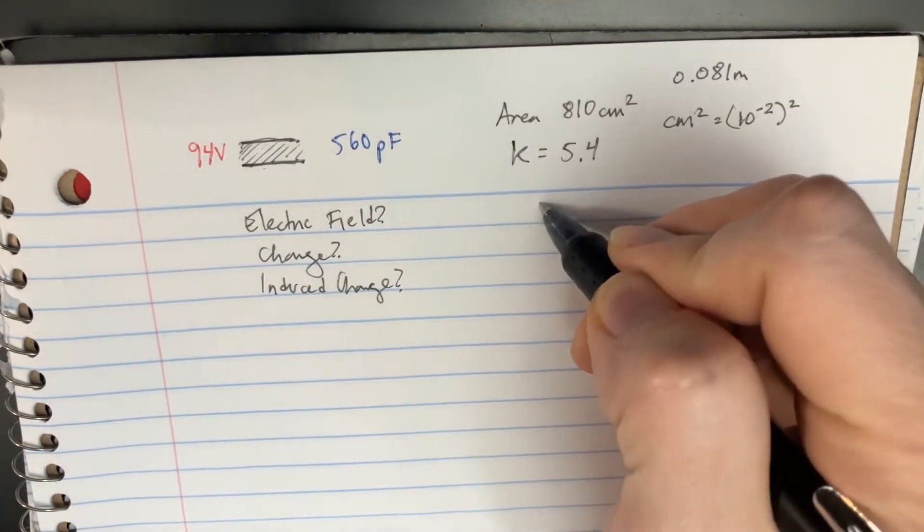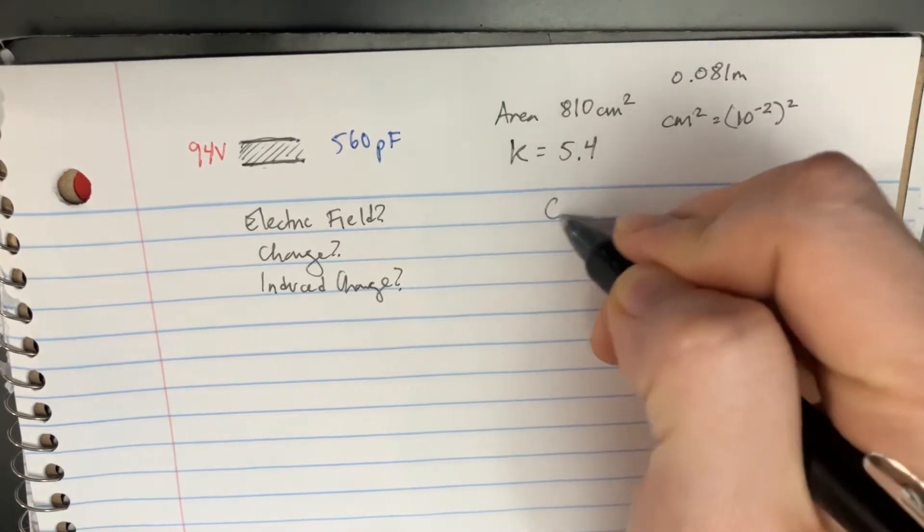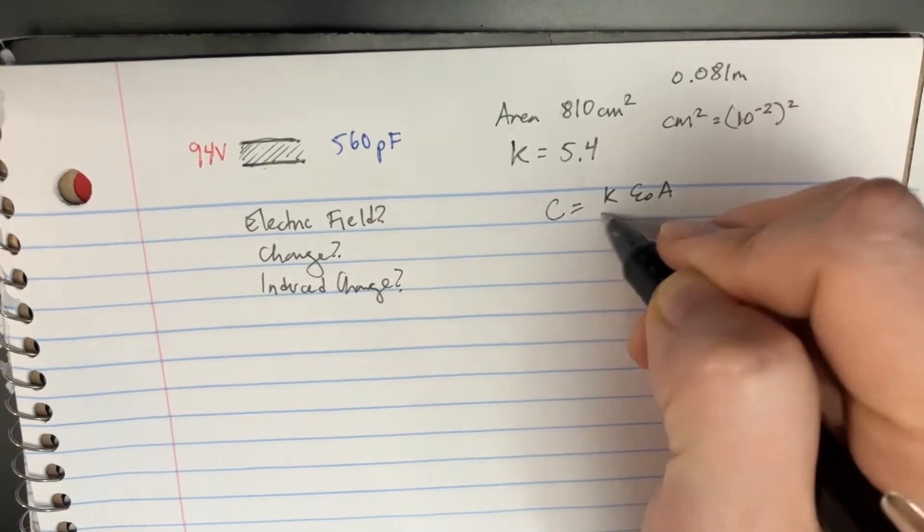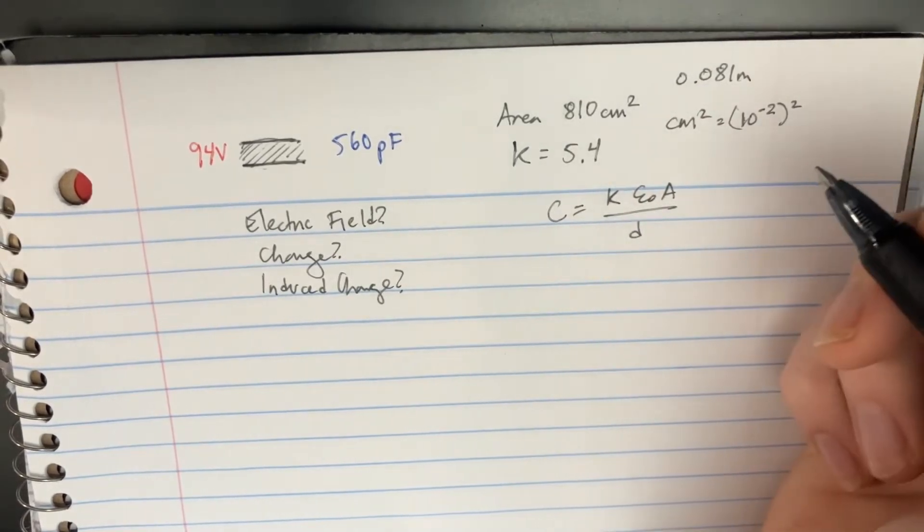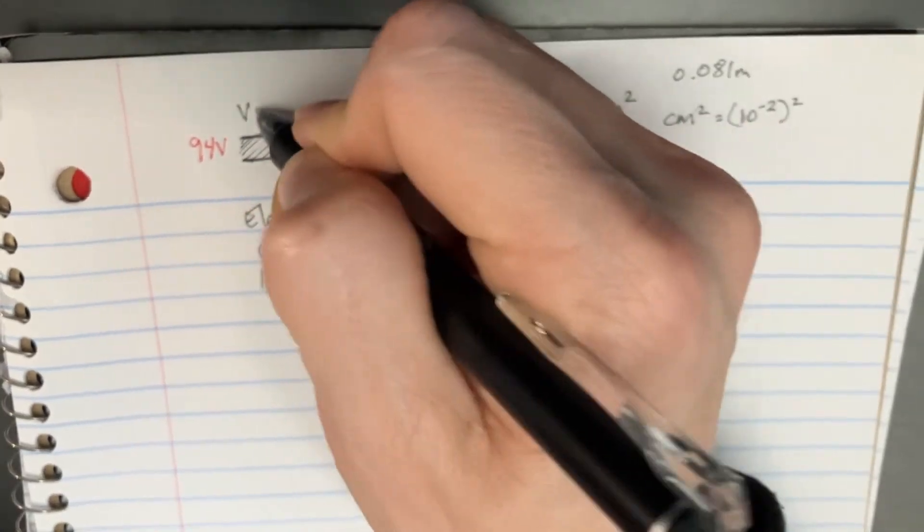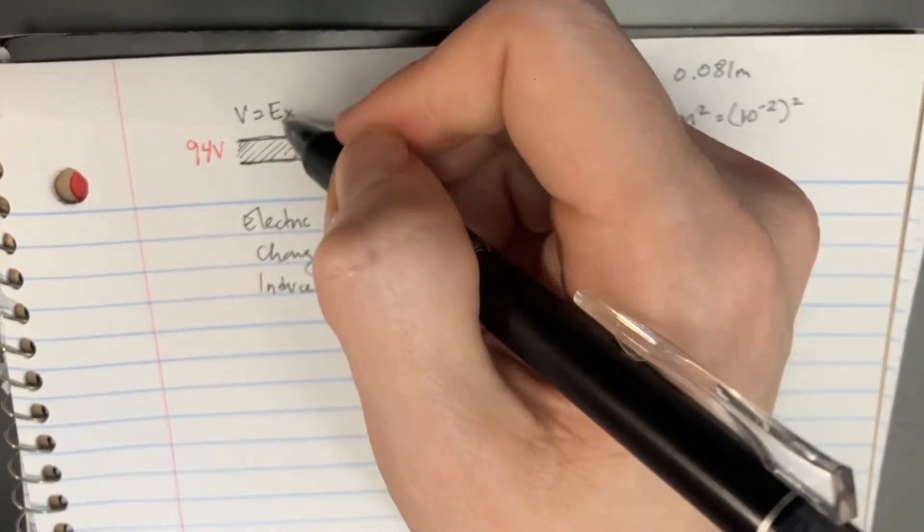Let's figure out what the electric field is. We can use C equals K epsilon naught A over d. Remember that for parallel plates, we have V equals Ex. That's the voltage equals electric field times distance.